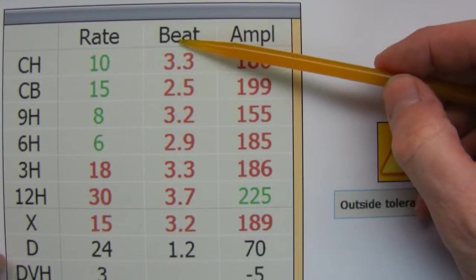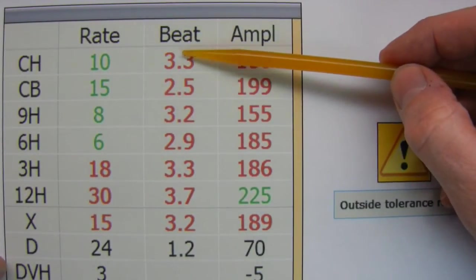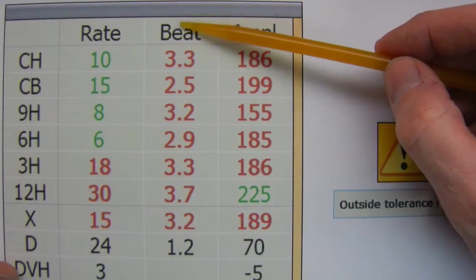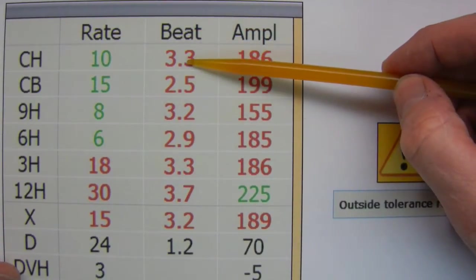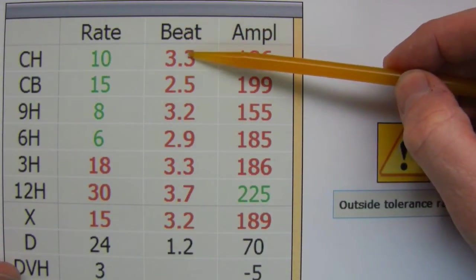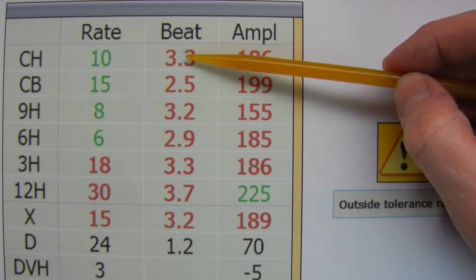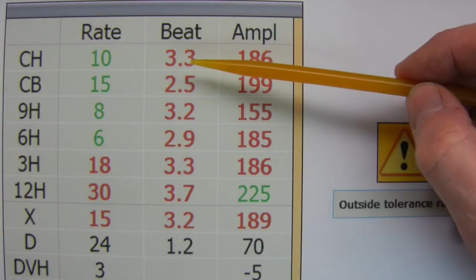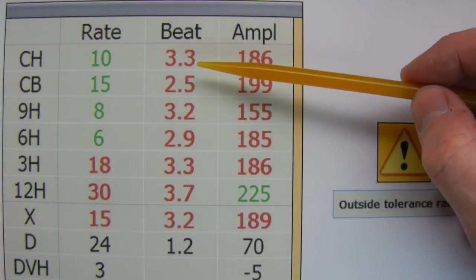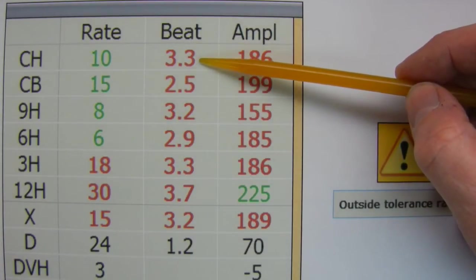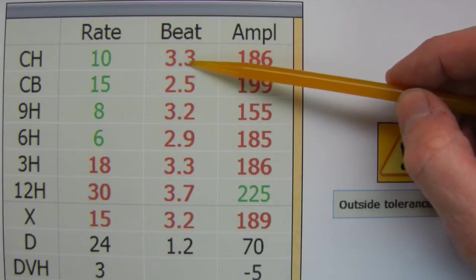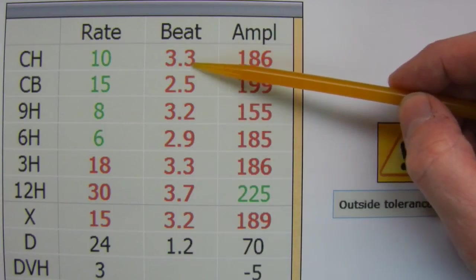The next column is the beat. And this is a measurement of the, in microseconds, of the difference between how much time the balance swings in one direction to how it swings in the other. Now, it's not exactly that, but that's a good analogy.